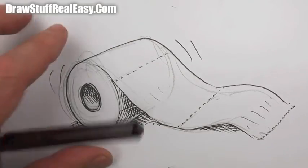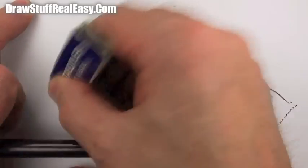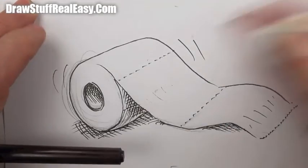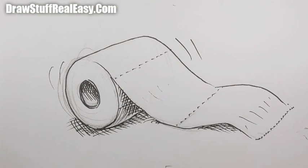I'm just going to erase that line from there because that kind of confuses it a bit. Good. There you go, how to draw a toilet roll.